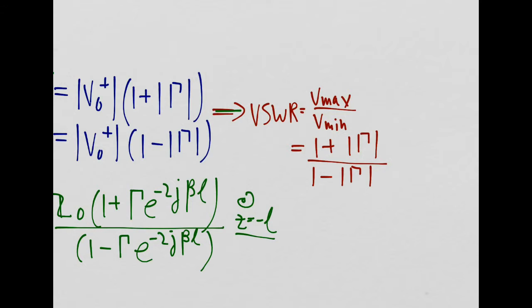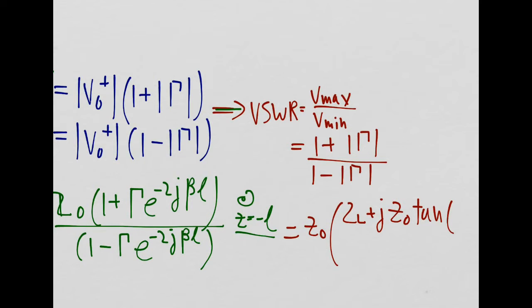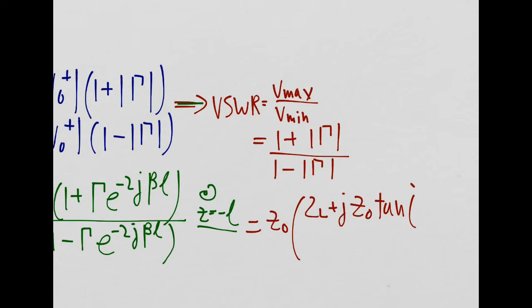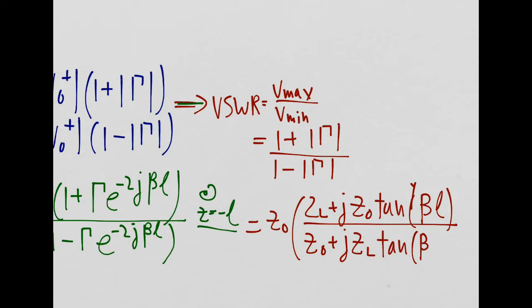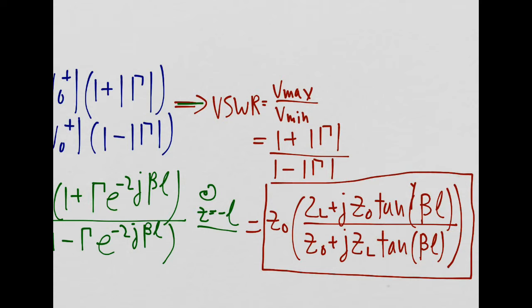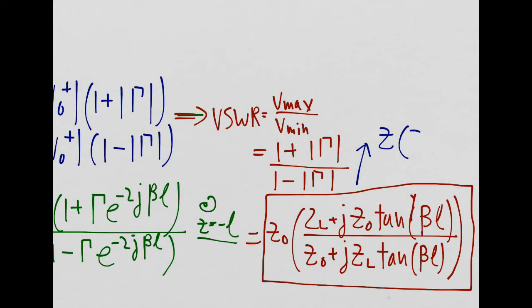We can use Euler's formula and a couple of trigonometric identities to rewrite this equation. The resulting equation is one of the fundamental equations in transmission line theory, and it forms the basis of the Smith chart, which we will learn about later in the course. The impedance is not constant as you move along the transmission line, and it depends on three parameters: the characteristic impedance Z-naught, the load impedance Z-L, and the distance away from the load l.